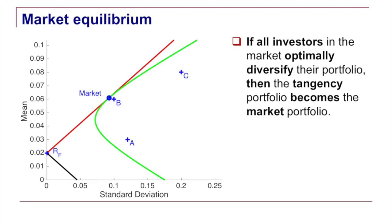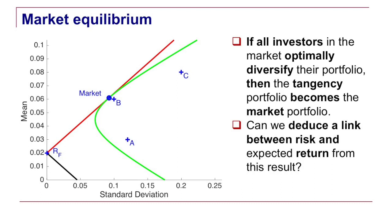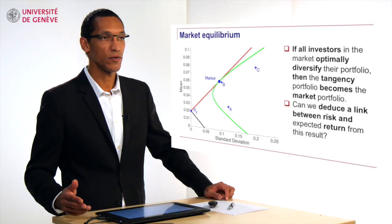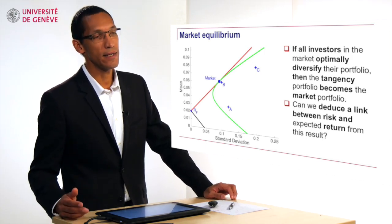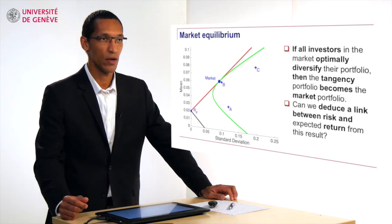Now we would like to see whether this has some implication in terms of market equilibrium for the link between risk and return. For a given level of risk what do we expect a particular financial asset or a particular financial portfolio, what do we expect the expected level of return to be?